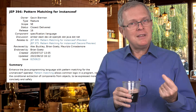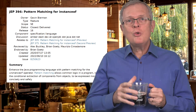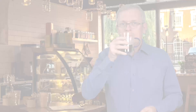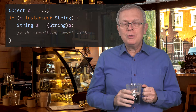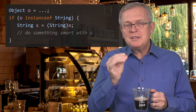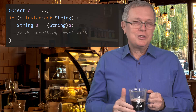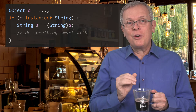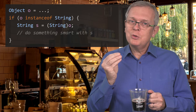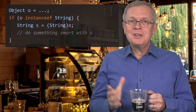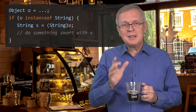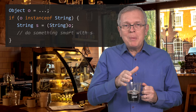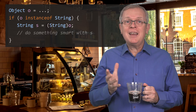It has also delivered what is called pattern matching for instanceof. And this pattern matching stuff is precisely what I would like to talk to you about in this JEP Café. What is this pattern matching for instanceof about? Well, I guess you all wrote this piece of code once or twice in your applications, at least. You know you get this object, and you know that this object is in fact a string of characters, and you want to use it as such.